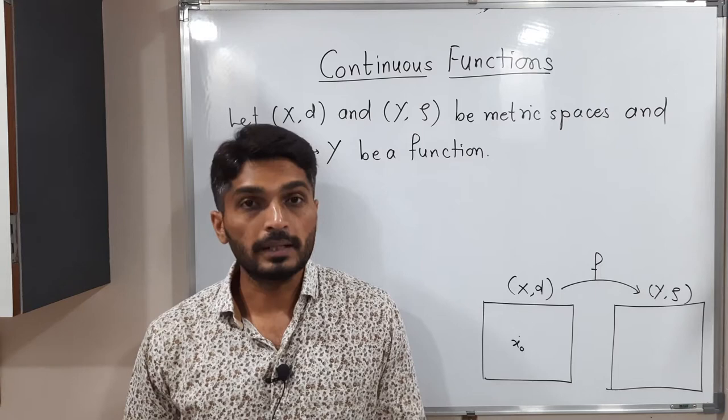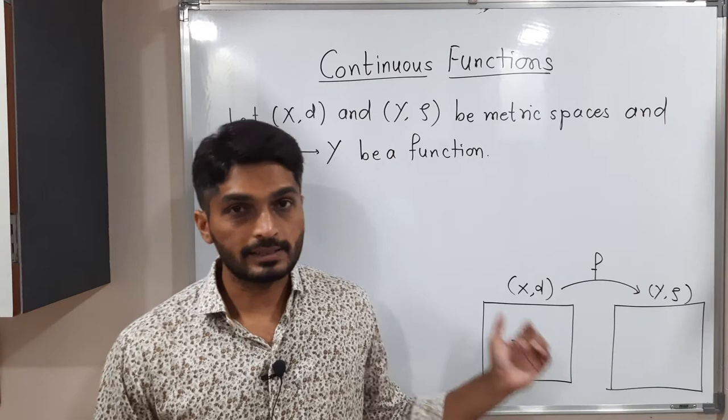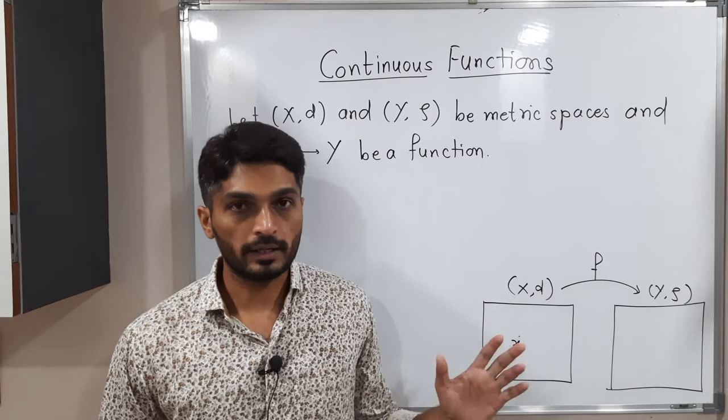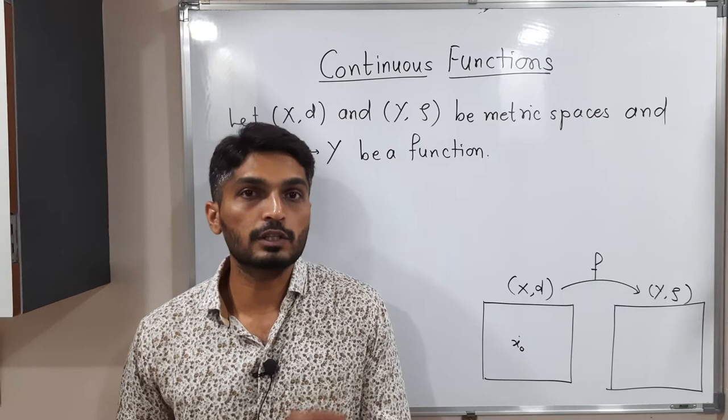We consider two metric spaces (X, d) and (Y, ρ). We have a function F from X to Y. So X is the domain of this function and Y is the codomain of this function. Let us see when we say the function F is continuous at a particular point.